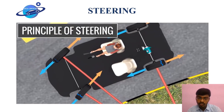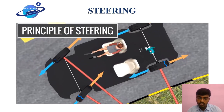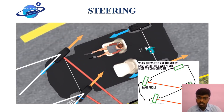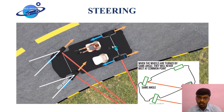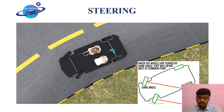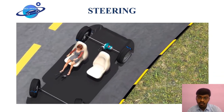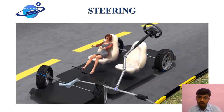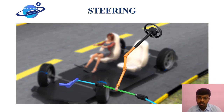If you observe carefully, the angles turned by the left and right wheels are not the same. This means that for perfect steering, the left and right wheels must turn at different angles. The steering mechanism is used to carry out this purpose, and the most commonly used steering mechanism in modern vehicles is the rack and pinion type.